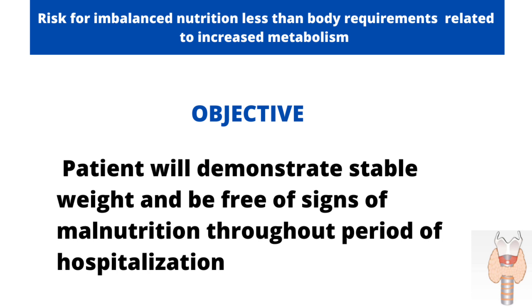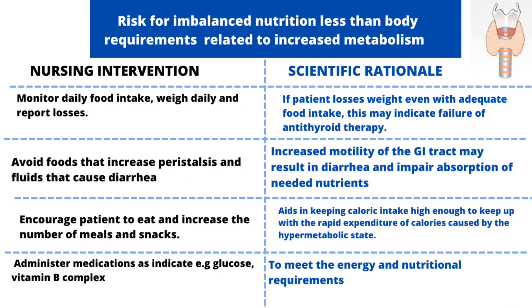The objective for the second nursing diagnosis is that the patient would demonstrate stable weight and be free of signs of malnutrition throughout the period of hospitalization. The first nursing intervention is to monitor the daily food intake of the patient, weigh the patient daily, and report any loss in weight.